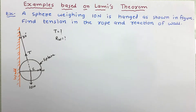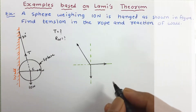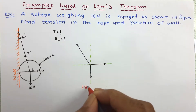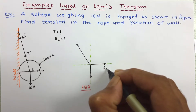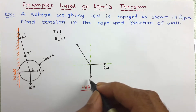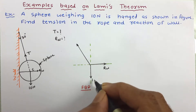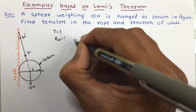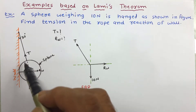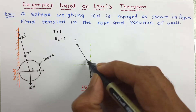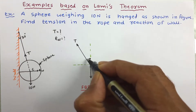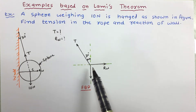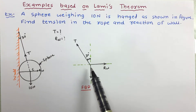Let us first draw the free body diagram. In the free body diagram, this is the reaction of wall Rw, this is the weight of the sphere that is 10 Newton, and this force is the tension in the rope. The angle of this rope with the vertical is given, and with the vertical it will make the same angle of 30 degrees. Here three forces are given, so it is convenient to work out this using Lamy's theorem.